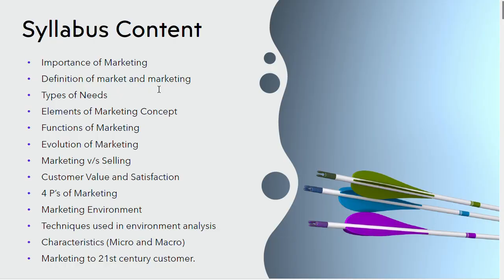The syllabus for Unit 1 covers: importance of marketing, definition of market and marketing, types of needs, elements of marketing concept, functions of marketing, evolution of marketing, marketing versus selling, consumer value and satisfaction, four P's of marketing, marketing environment techniques, and characteristics at micro as well as macro level.